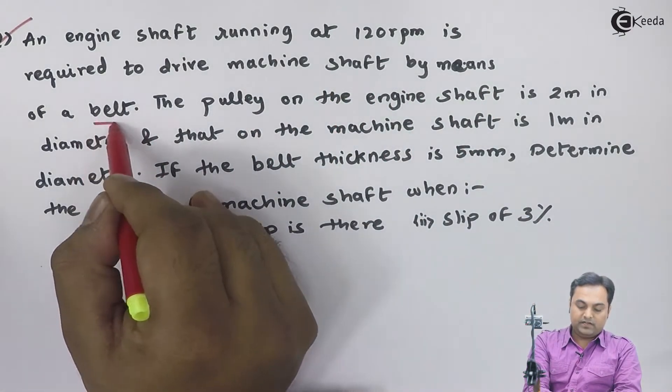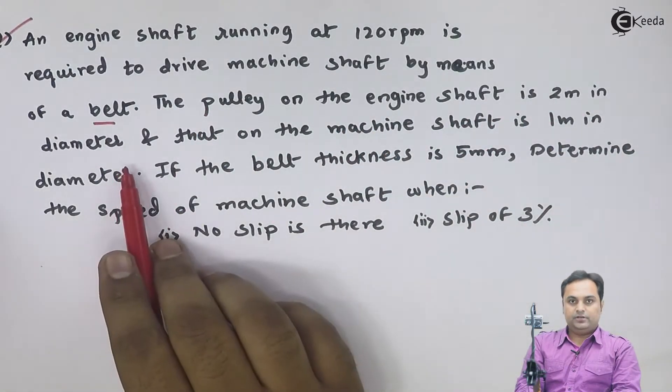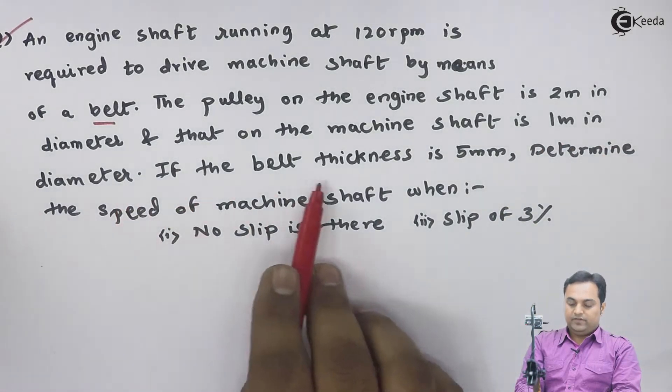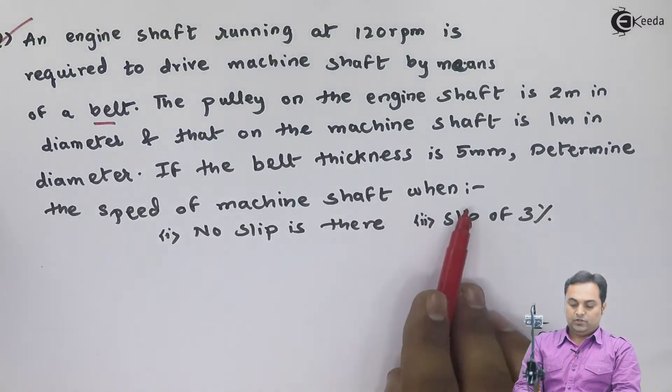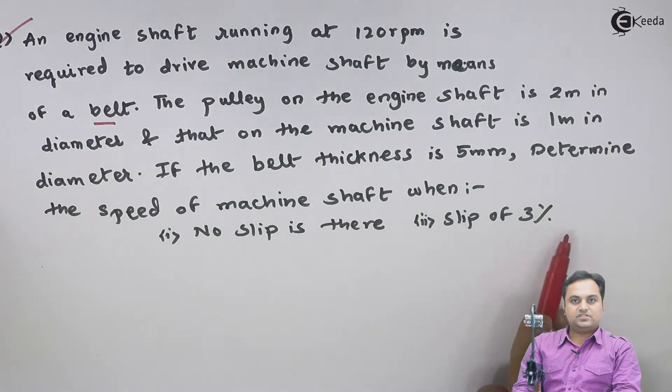So it is a problem of belt drive. The pulley on the engine shaft is 2 meter in diameter and that on the machine shaft is 1 meter in diameter. If the belt thickness is 5 mm, determine the speed of machine shaft when no slip is there and if there is a slip of 3%.